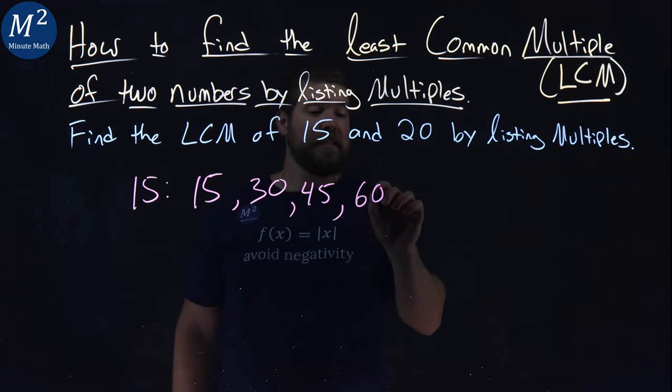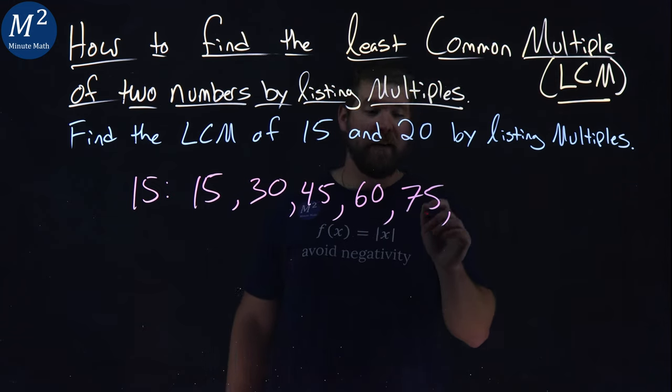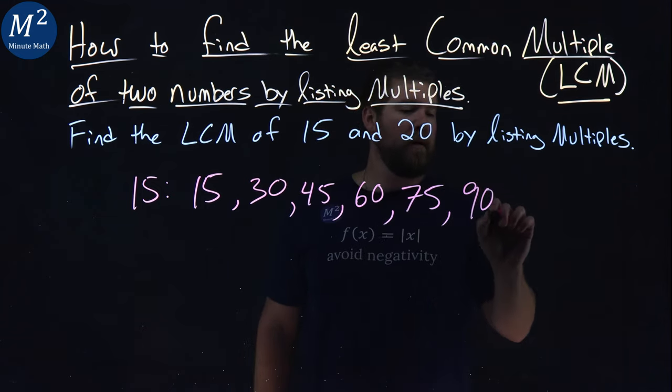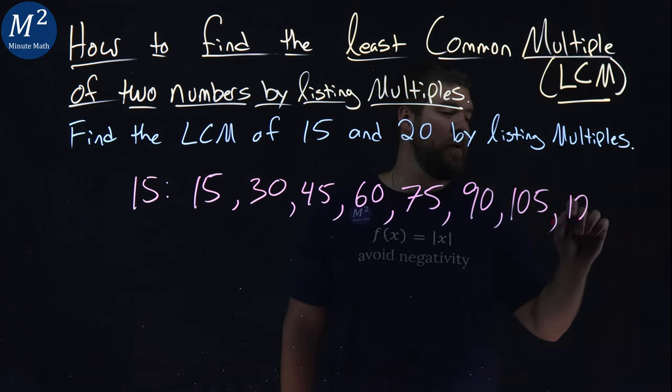45 plus 15 is 60. After 60, we get 75. Add another 15. We got 80, 90. Oh, 90 plus 15 is 105. 105 plus 15 is 120.